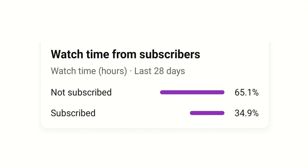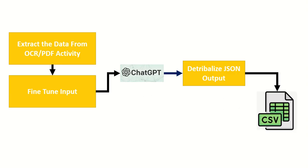Without wasting time, let's go directly to today's process. We will follow this workflow to achieve the IDP process. The first step is to extract the data from a file using the OCR or PDF activity, which is available in A360 Community as well.